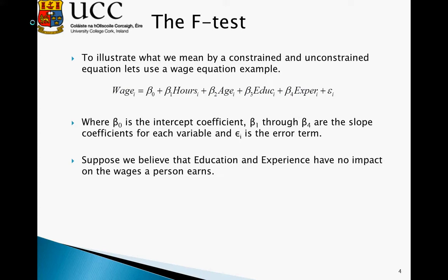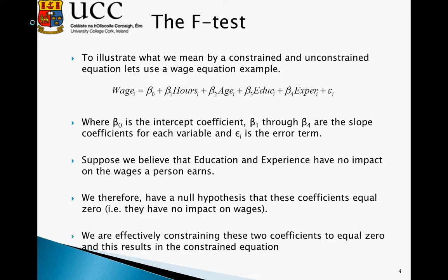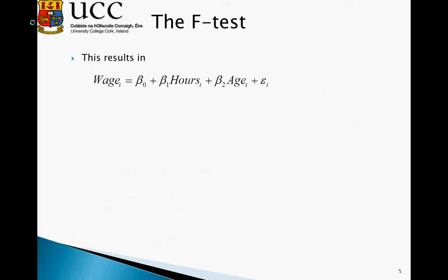Let's suppose that we believe education and experience have no impact on the wages a person earns. What we are essentially stating here is that these coefficients equal 0, i.e. they have no impact on wage, so beta 3 and beta 4 are equal to 0. We specify this in the null hypothesis as beta 3 equals beta 4 equals 0. After we've imposed these constraints, this results in a constrained equation where wages are just equal to hours and age, and the education and experience of someone has no impact on their wage.